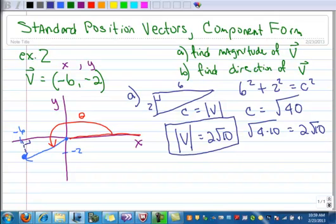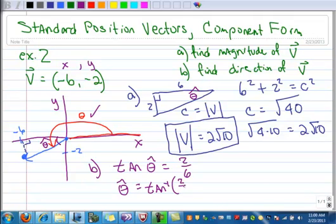So for part B, we want to calculate the direction. If I know this angle right here, theta hat, which is right here, then I can take theta hat and add 180 to it to get the whole direction. So let's calculate theta hat first, and I can use tangent. So I've got the tangent of that angle in my triangle, opposite over adjacent. And so if we use our inverse tangent function 2 over 6, then I get 18.4 degrees. Make sure you're in the degree mode.